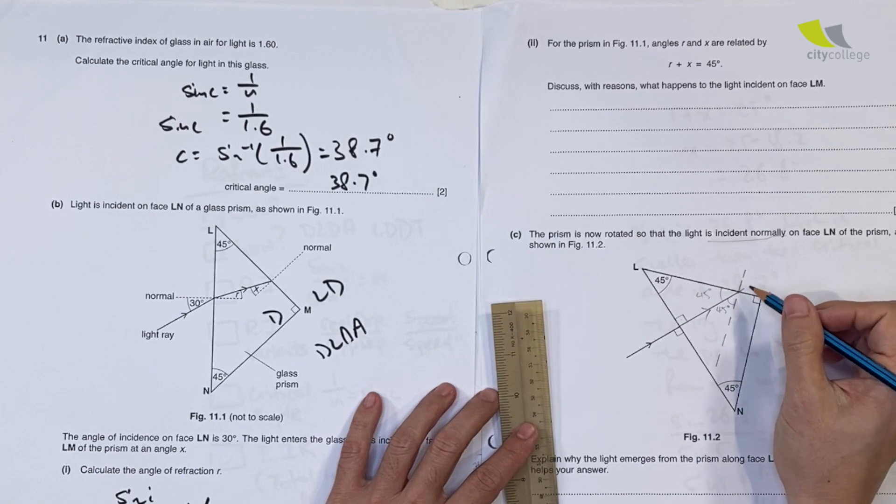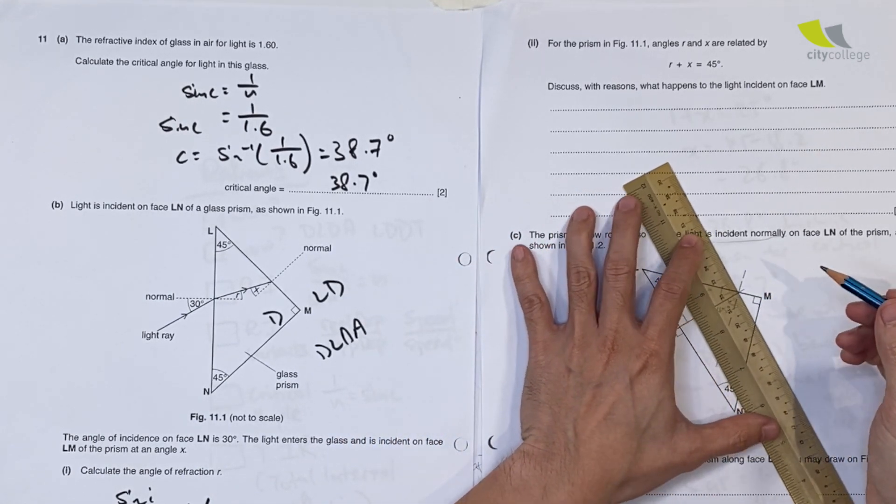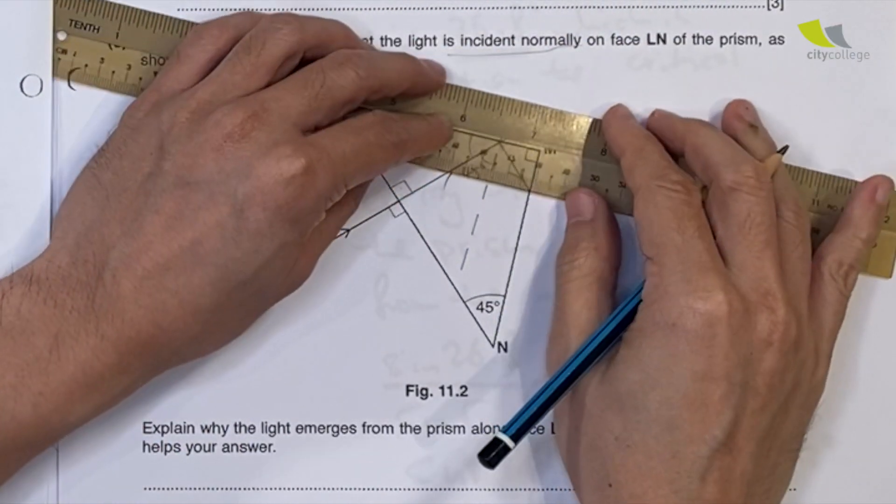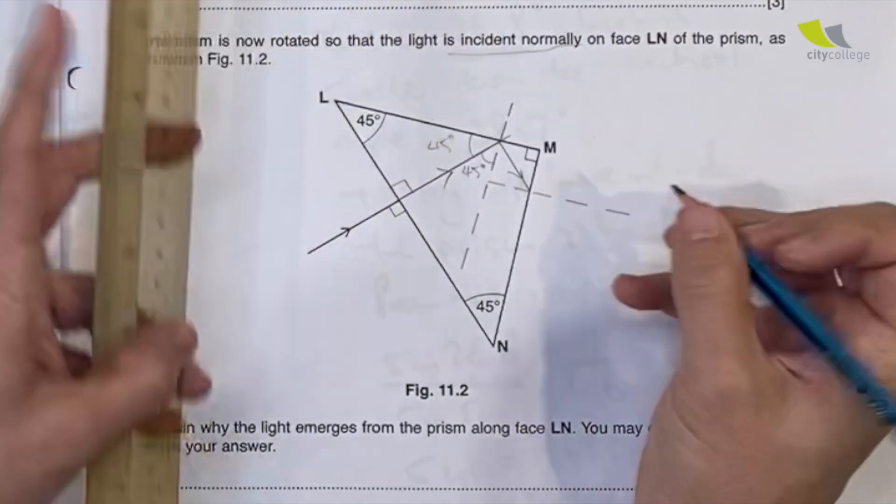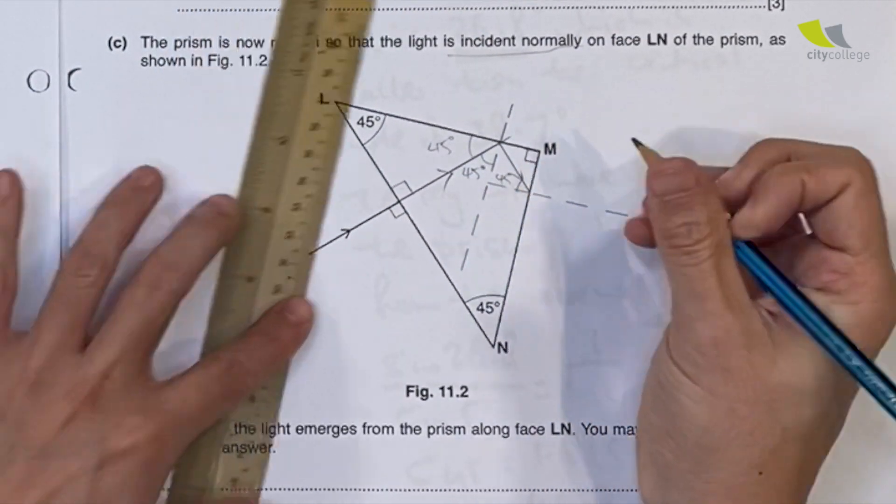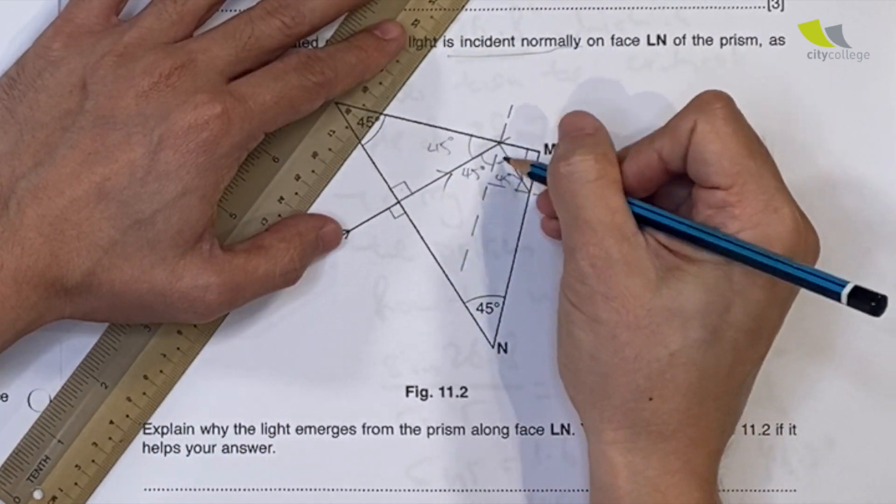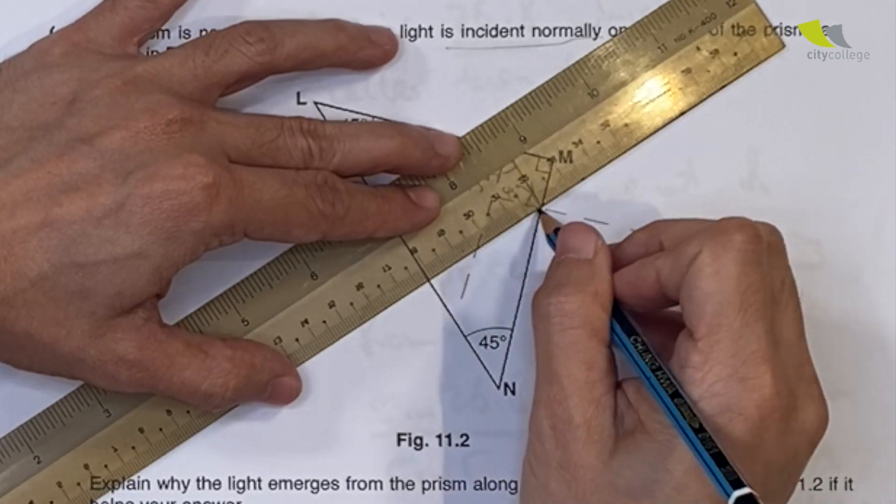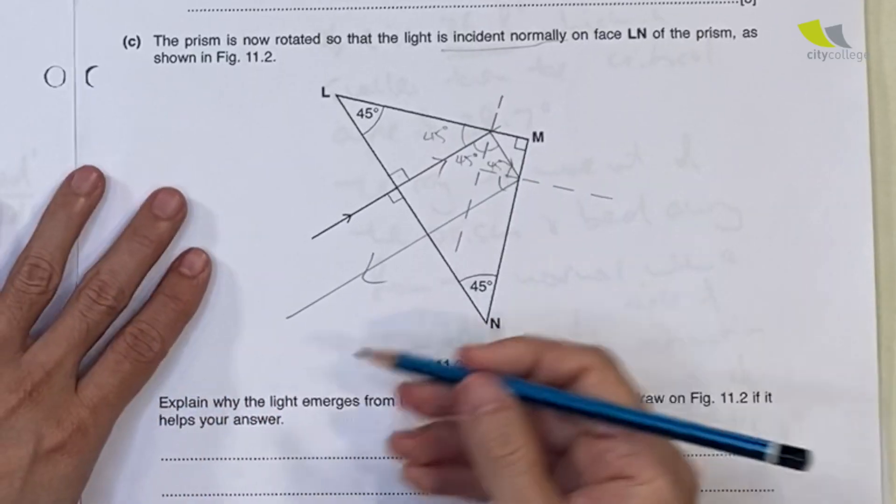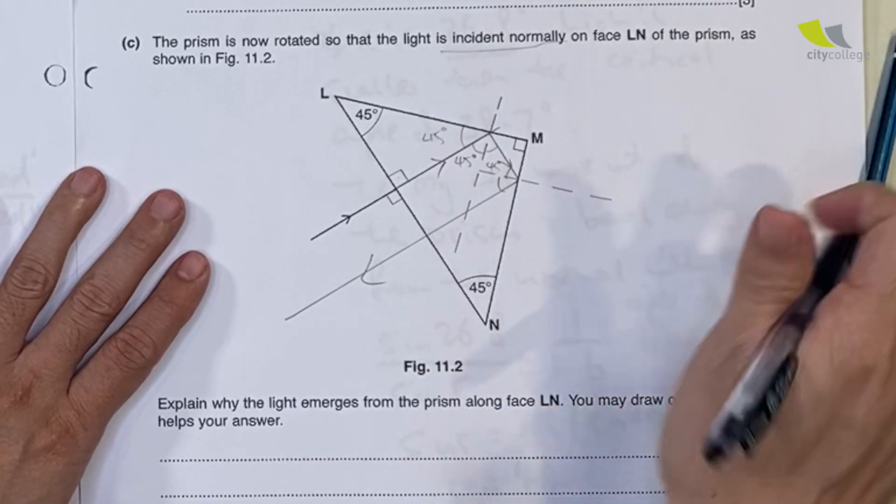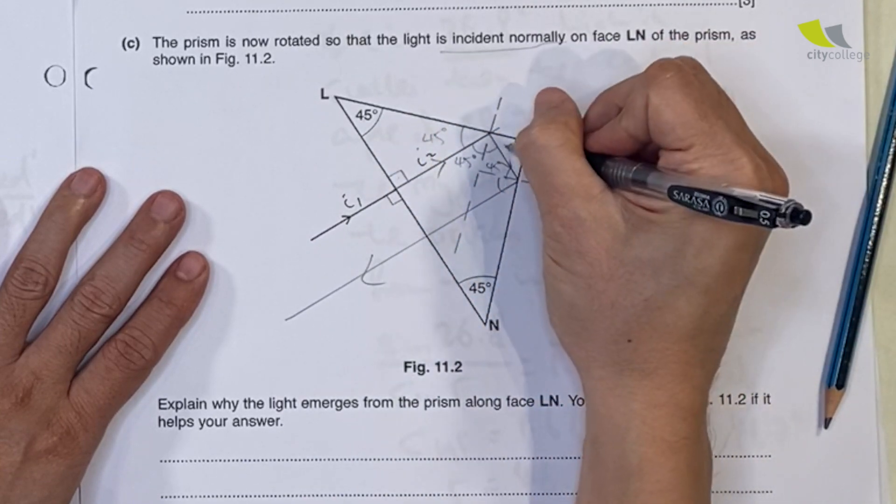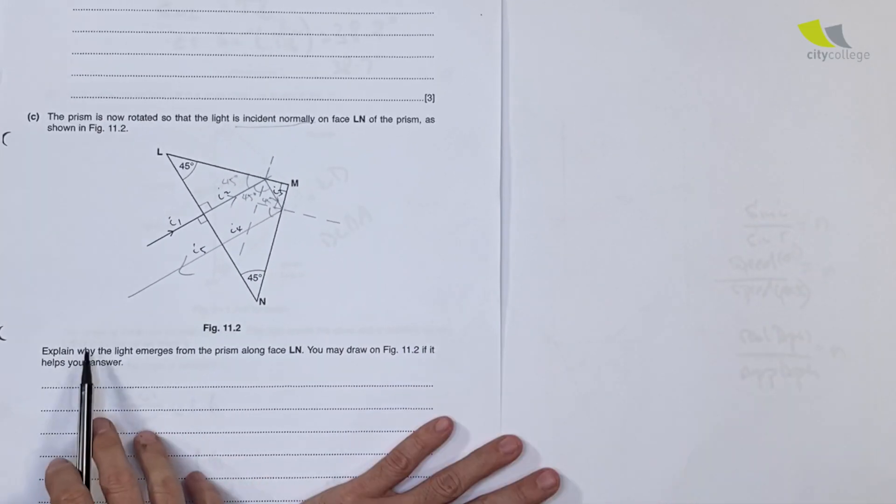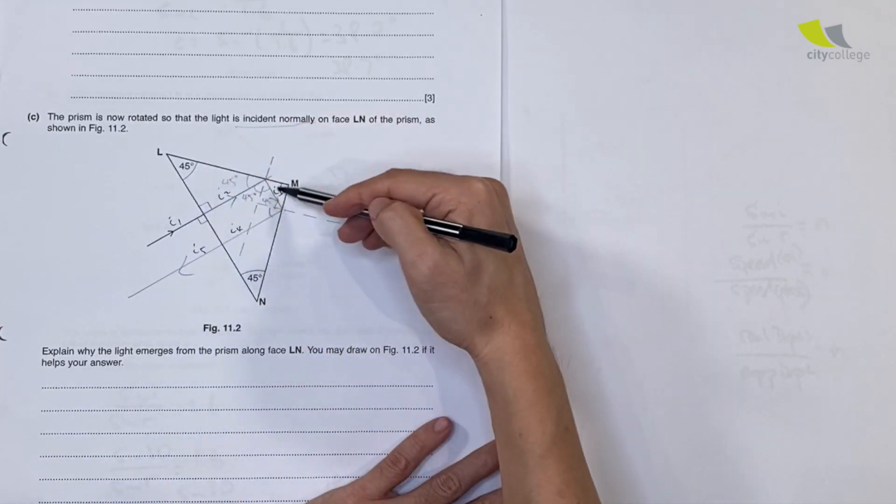The light ray will strike the prism inside at 45 degrees. 45 degrees is larger than the critical angle, so total internal reflection will happen. It will come out at 45 degrees, strike here, and again at 45 degrees, which is also larger than the critical angle, so it will come out this way. This is the full path of light. To answer our question, let's label all the light rays: I1, I2, I3, I4, I5. Now let's write the story.